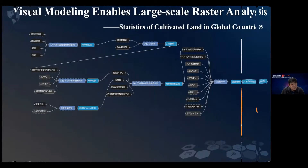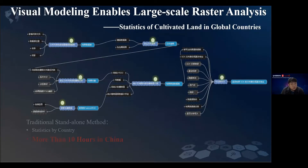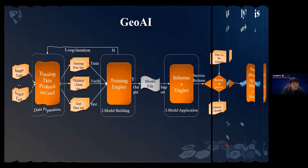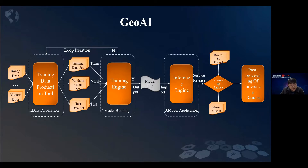We can also use GP tools to work with distributed analysis to efficiently complete a series of data processing tasks. The GeoAI function, based on deep learning, will also greatly improve the use efficiency of image data. The technology of GeoAI has been introduced in detail in a previous report, so it won't be covered extensively here.